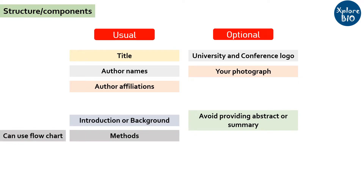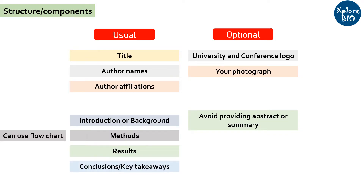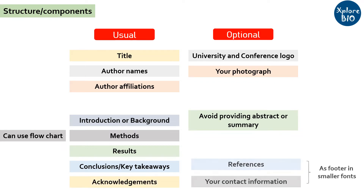For methodology, you can also use a flowchart for easy understanding and visibility. Next, mention the results, which is the heart of your poster. Include figures and tables of the most important experiments and informative results — remember that results cover the maximum portion of a poster. In the next section, write the conclusions or key takeaways. In the acknowledgements section, acknowledge funding agencies and people who provided materials or other help. Next, mention the most important papers referred to, following proper formatting style. You can also include your contact details such as phone number or email in case someone wants to reach you.